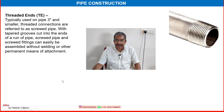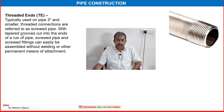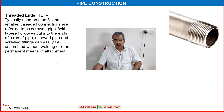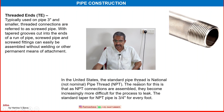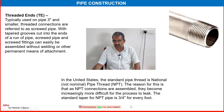The third end preparation is the threaded end, commonly seen in house plumbing applications with small plastic pipes. Typically used on pipe 3 inch and smaller. Threaded connections are referred to as screwed pipe, with tapered grooves cut into the ends. Screwed pipe and fittings can be easily assembled without welding. In US standard, the pipe thread is called National Pipe Thread, NPT. NPT connections become increasingly more difficult for the process to leak as they are assembled. The standard taper for NPT pipe is 3/4 inch per foot.